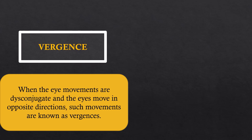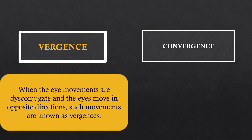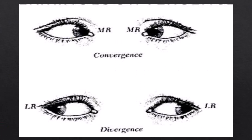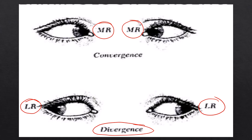Vergences are movements where both eyes move in opposite directions — a disconjugate movement. There are two types: convergence and divergence. Convergence means both eyes converge towards each other towards the nose, achieved by the medial rectus of both eyes. Divergence means both eyes diverge away from the nose, achieved by the lateral rectus muscles.